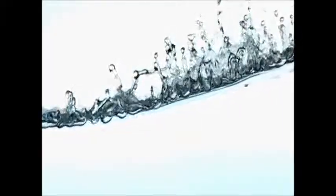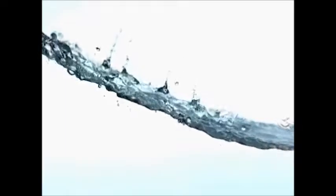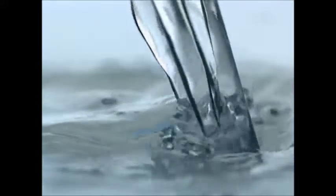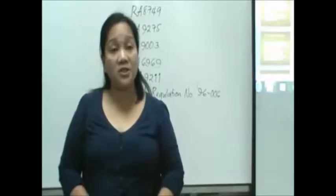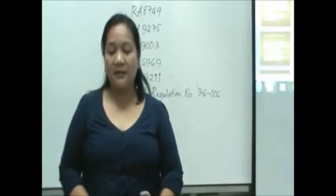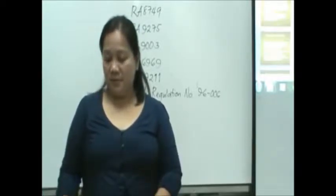For water quality criteria, we are referring to wastewater here. RA-9275 is separate from the PNSDW, so water quality criteria mentioned here refers to wastewater quality criteria. It is not sustainable to analyze all 35 water quality parameters discussed in lecture. Instead, as stipulated in the law, you only need the minimum wastewater quality parameters: dissolved oxygen, pH, biochemical oxygen demand, and total coliform organisms. Any effluent must pass these minimum parameters.